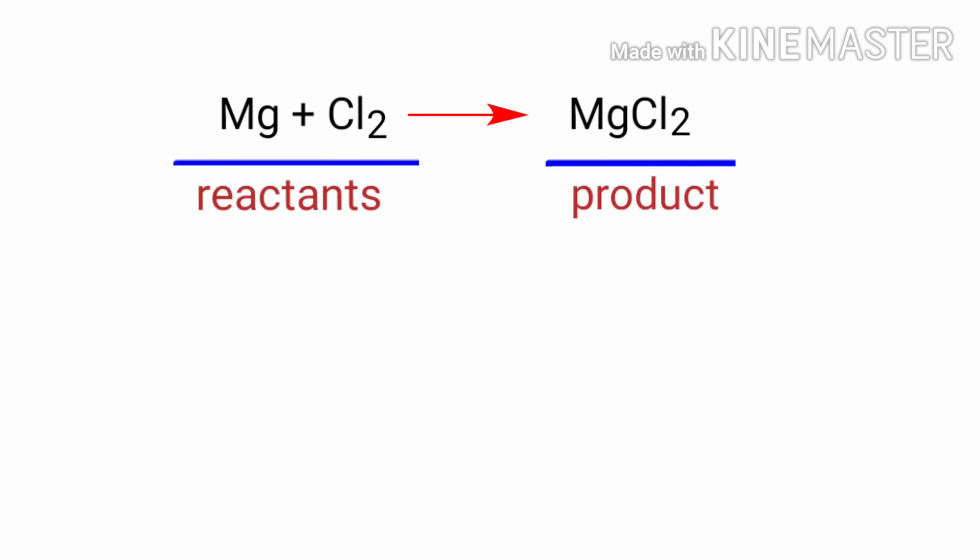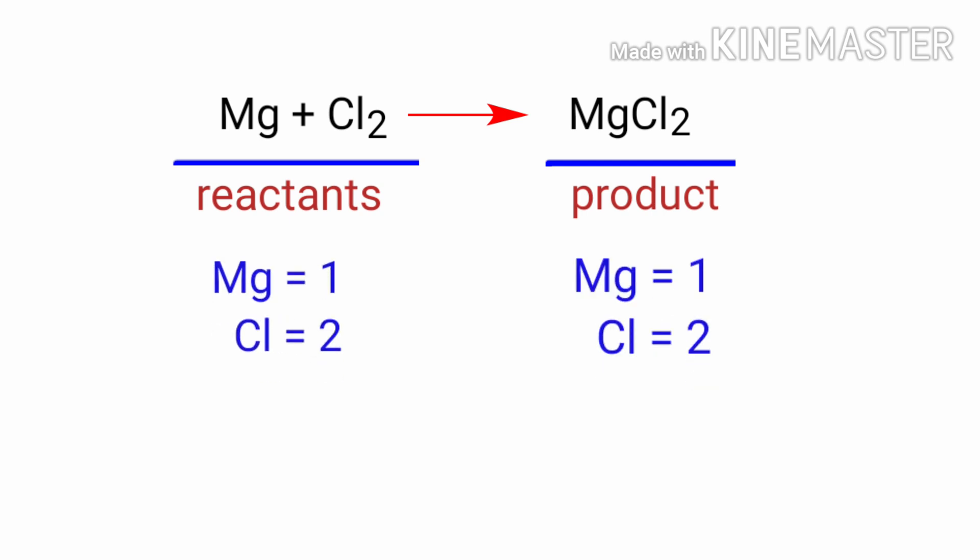In this equation, the reactants are Magnesium and Chlorine, and the product is Magnesium Chloride. If you look at this equation, the number of atoms at the reactant's side are the same as the number of atoms at the product's side.